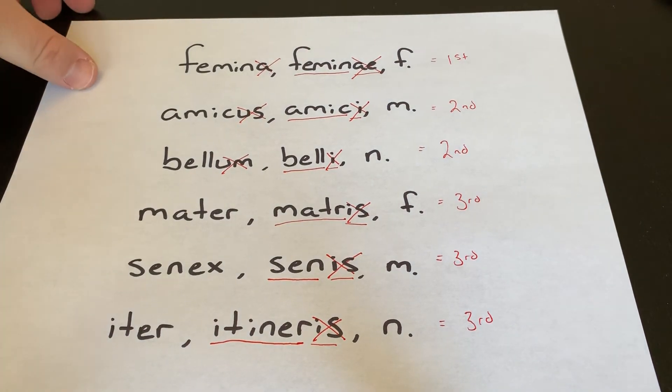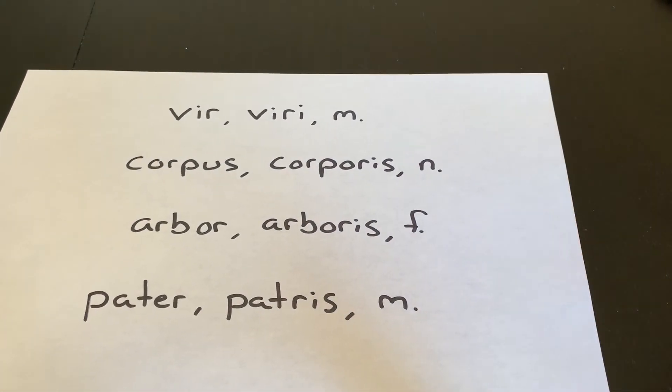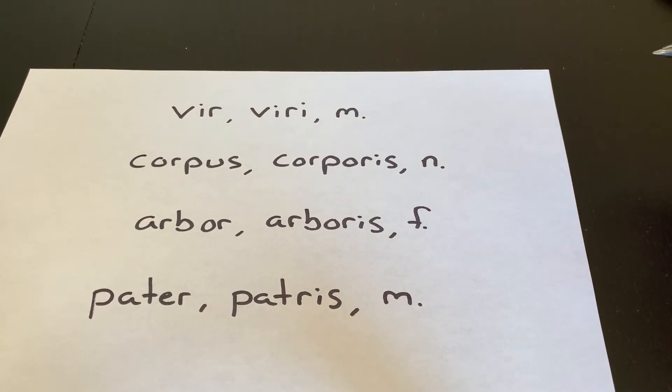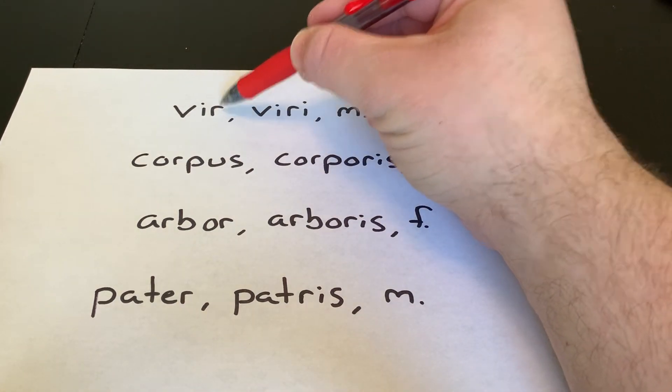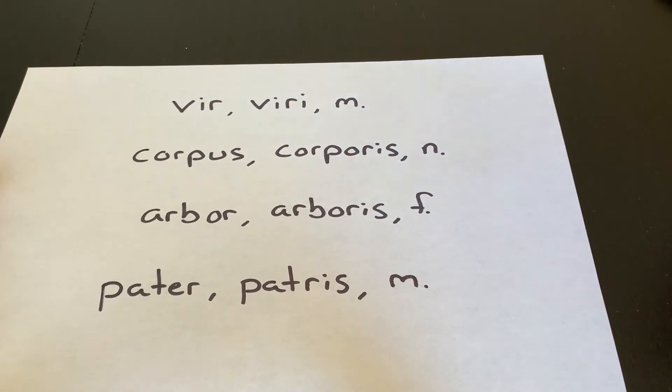Let's take a look at a couple of words that are a little tricky. And these are the words where you can really see, this is where I need to pay attention to the genitive. Because right here, if we see that R, you might think that doesn't end in US or that doesn't end in UM and thus it must be third.